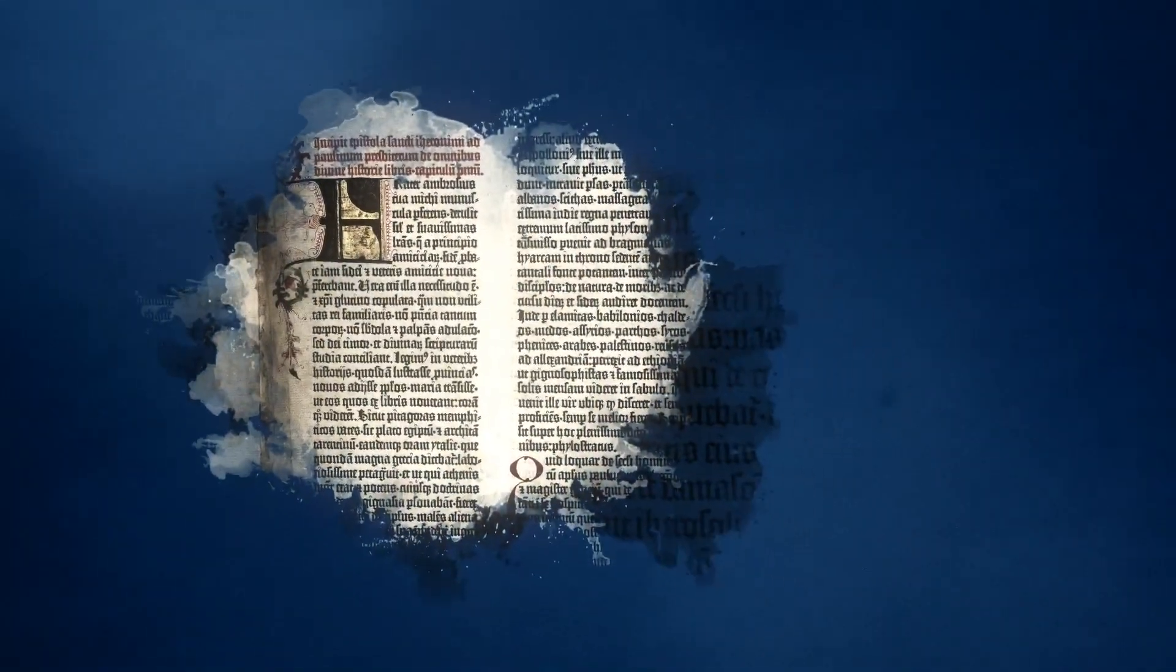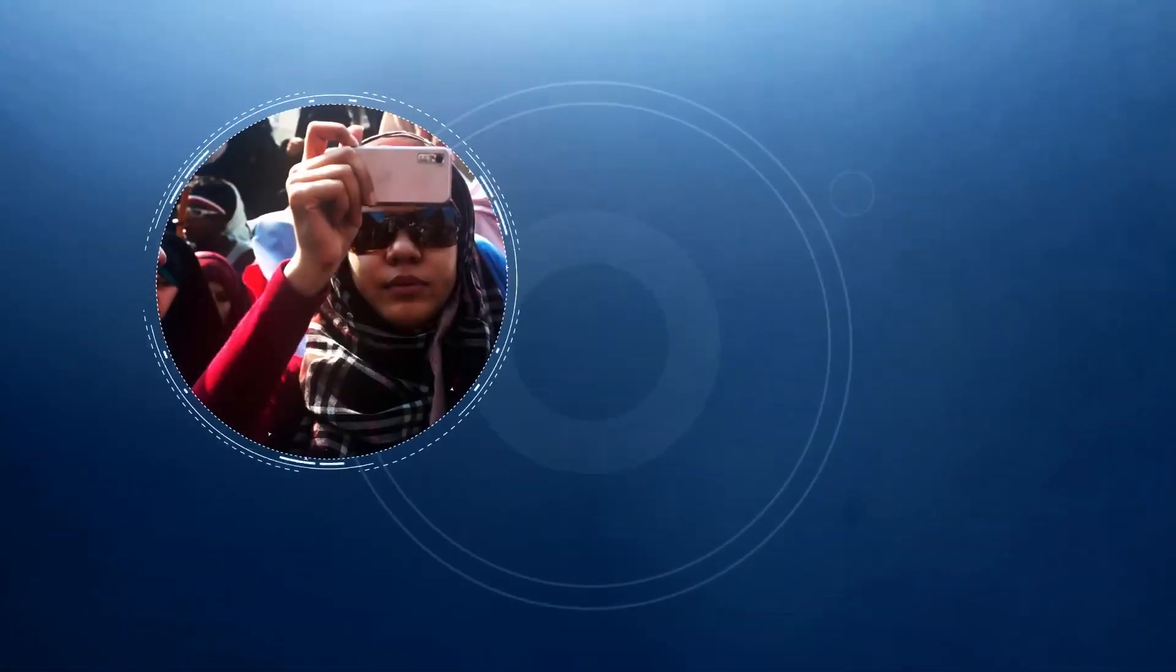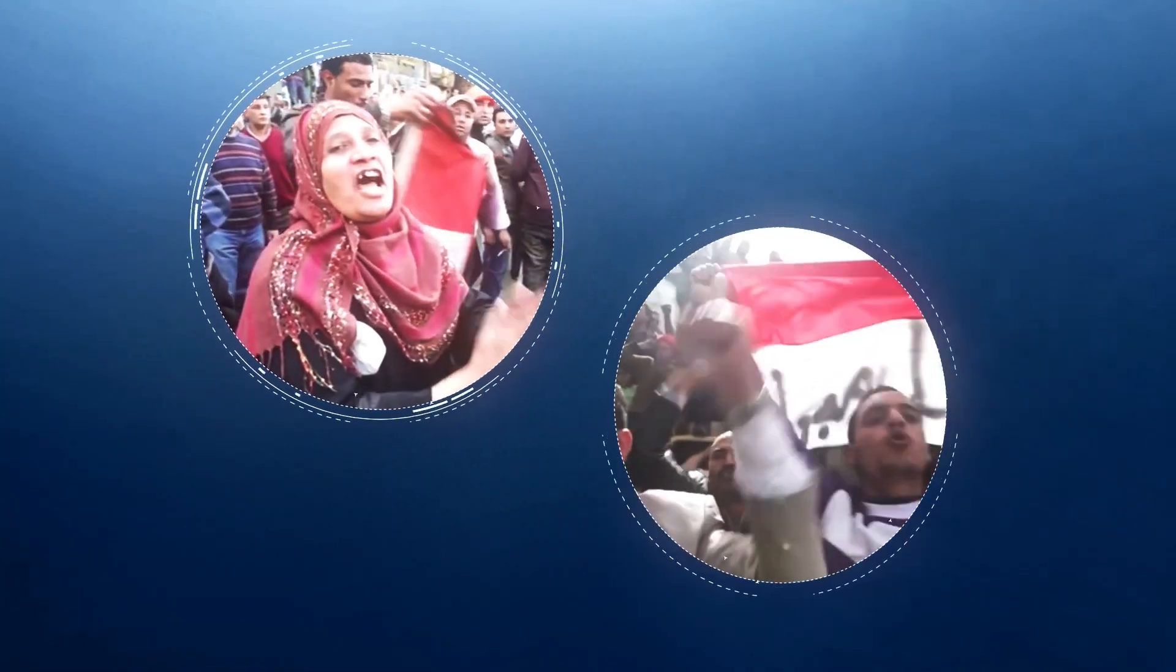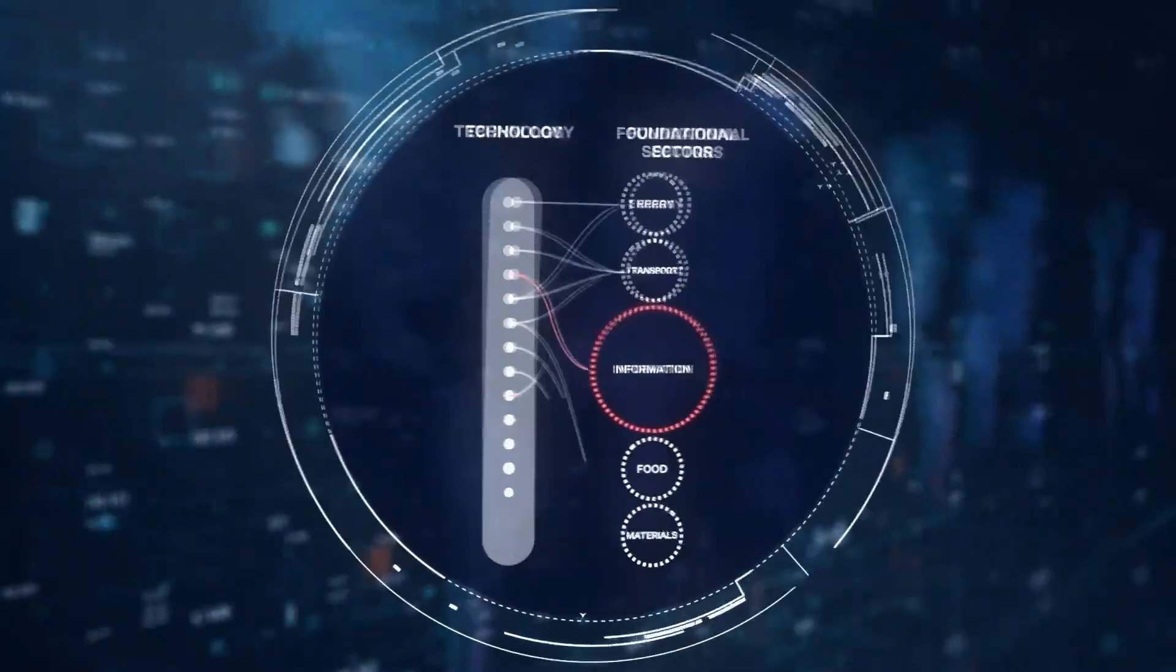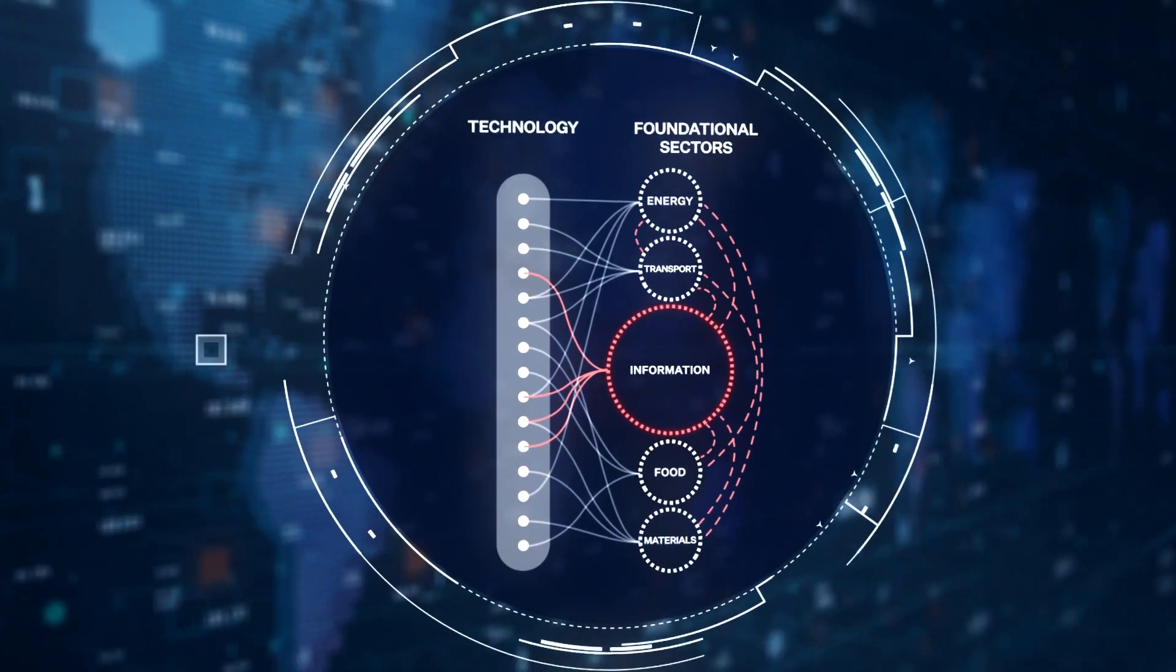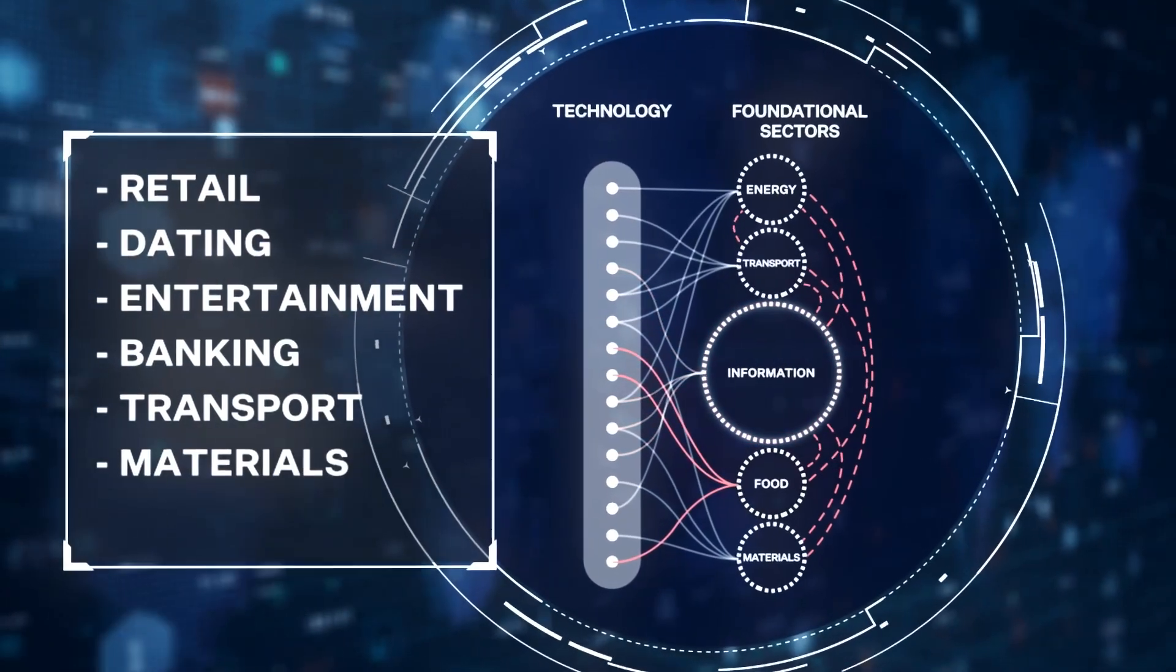Just as the printed books saw church and state lose control over information, today's information revolution proves how outmodeled are the centralized ways of managing society. The information revolution has rippled out and begun disrupting everything else: retail, dating, entertainment, banking, transport, materials and food.